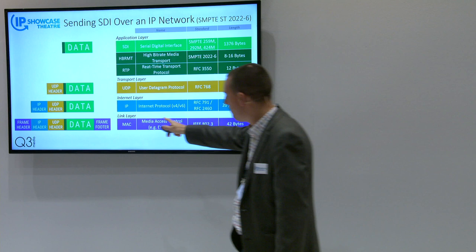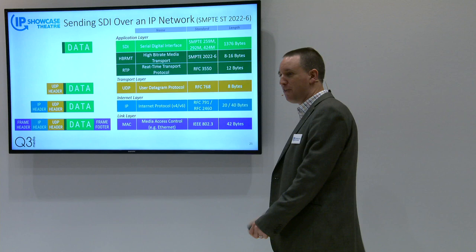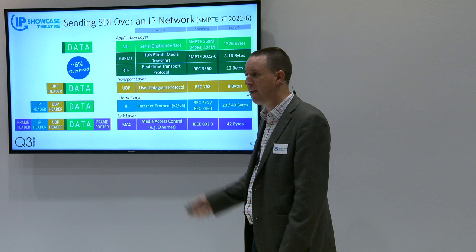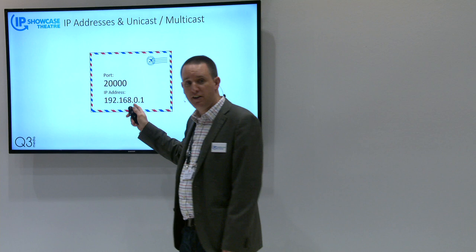If we look at those headers — and hopefully it wouldn't be a surprise that they're not to scale — in terms of the number of bytes that each part carries in something like the 2022-6 standard, you've got the RTP header plus a little extra added to make it more useful for the broadcast environment. Then you've got all the UDP, IP, and MAC Ethernet layer stuff. You can see it's really not a massive overhead, but there is a data overhead — we are adding a bit of data to send across that network.